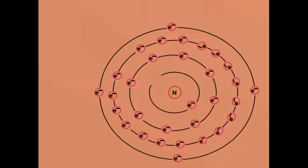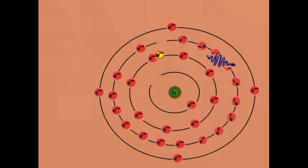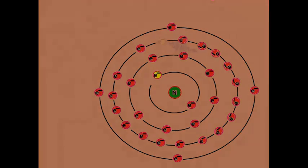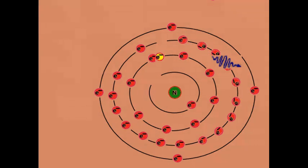Now question is, how much energy is released and in what form? Energy equivalent to difference of outer shell and inner shell energy state is released in the form of electromagnetic energy or photon, also called characteristic X-ray.